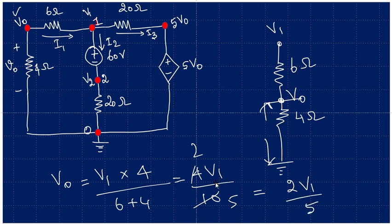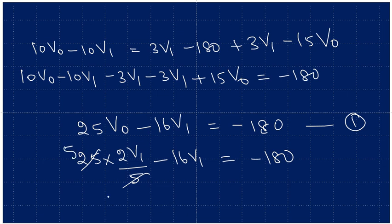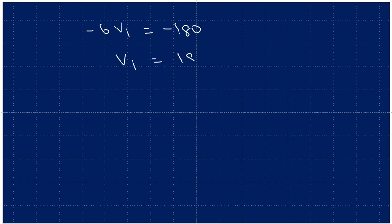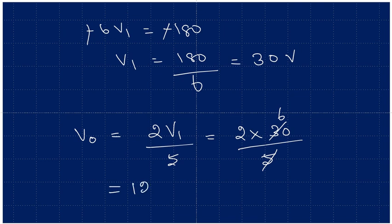Going back to our equation, substituting V0 equals 2V1 over 5 into 25V0 minus 16V1 equals minus 180: 25 times (2V1 over 5) minus 16V1 equals minus 180, giving 10V1 minus 16V1 equals minus 180, so minus 6V1 equals minus 180, therefore V1 equals 30 volts. Since V0 equals 2 times V1 divided by 5, V0 equals 2 times 30 divided by 5, which gives us V0 equals 12 volts.